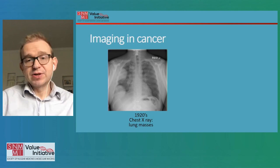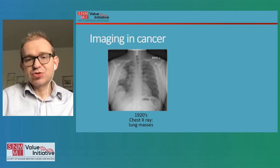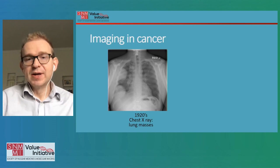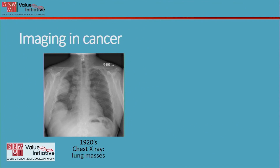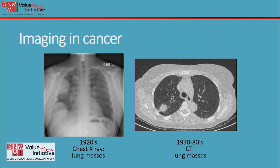Imaging has been used for a long time in cancer. Since the 1920s, chest x-rays and x-ray-based methods have been used for seeing inside the human body. You can see here on the left side of the screen an example of a chest x-ray demonstrating lung masses in a patient with cancer. More recently, techniques such as CT — computer tomography — and MRI, or magnetic resonance imaging, allow us to get even greater anatomical resolution. You can see here on this CT scan a mass in the patient's right lung.